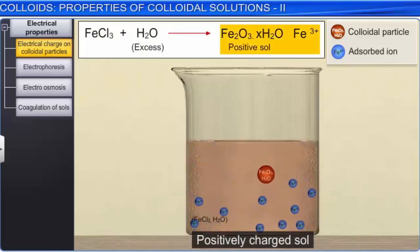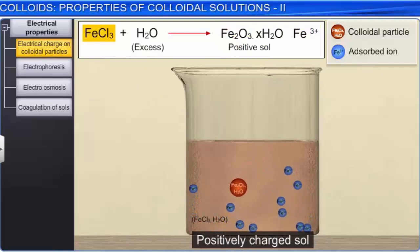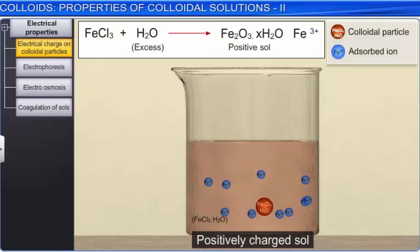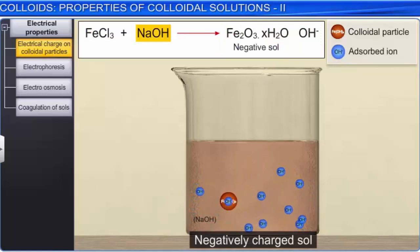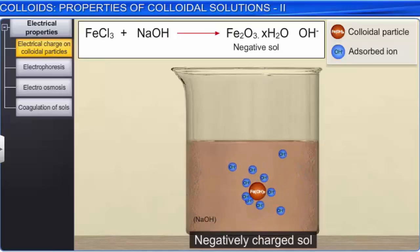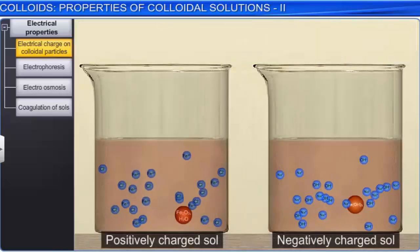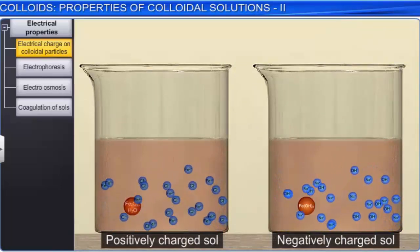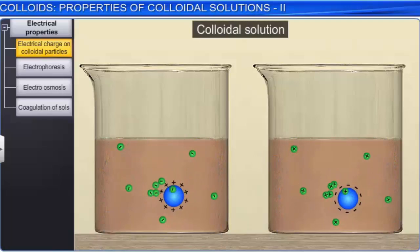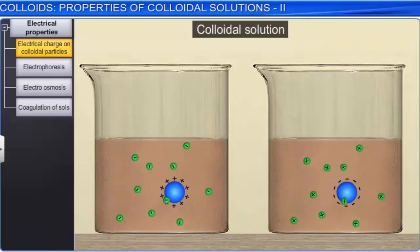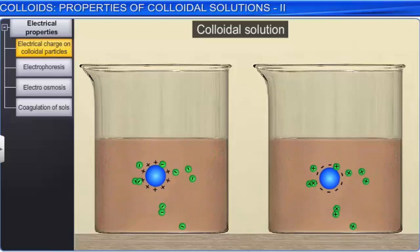Similarly, a positive sol of hydrated ferric oxide is formed if ferric chloride is added to excess of hot water, due to the preferential adsorption of ferric ions. However, a negatively charged sol of ferric hydroxide is obtained when ferric chloride is added to sodium hydroxide. In this case, there is preferential adsorption of hydroxyl ions on the colloidal particles. In either case, the ions left out will give an equal and opposite charge to the dispersion medium and will remain in it.